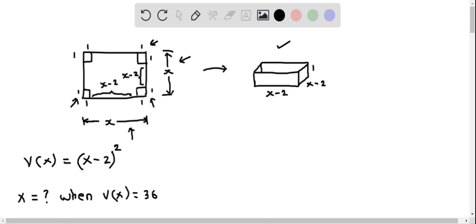Then this length will become the length of the box. So if the side length of the square is x, then this length will be x-2 because we are removing a side length of 1 foot from both sides.